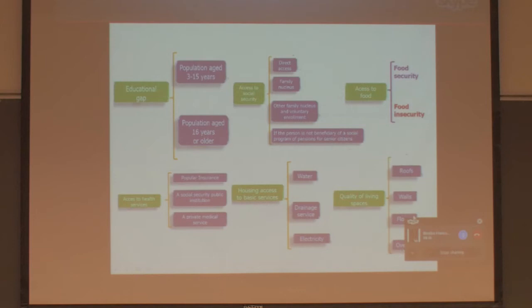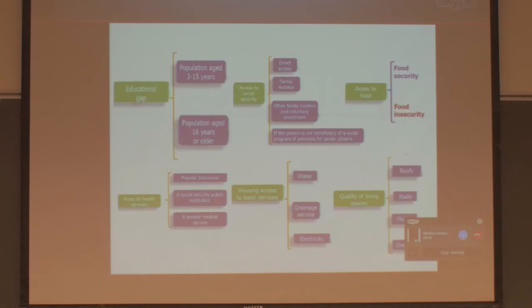The Mexican law also includes a dimension of social cohesion, but policy makers found it very difficult to formulate an indicator representative at the individual level — the unit of analysis in this index. They were only able to formulate social cohesion at the community level, so this dimension is reported alongside the results of the Mexican Poverty Index but not subscripted at the individual level.